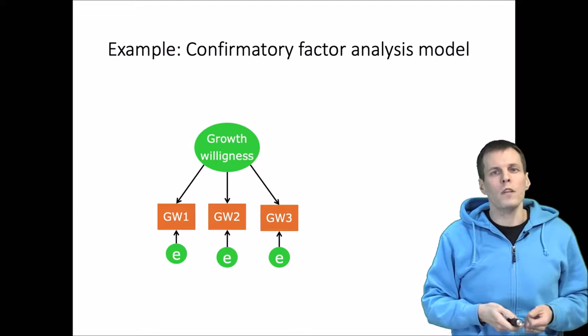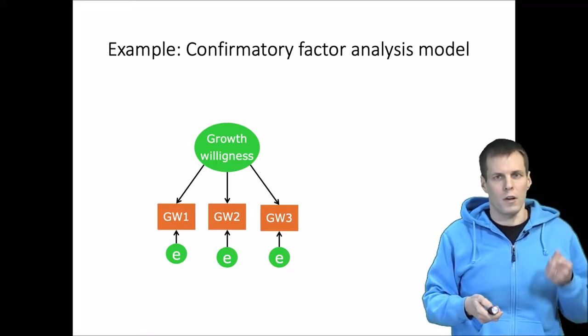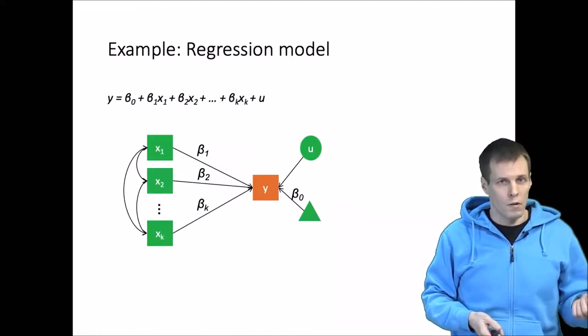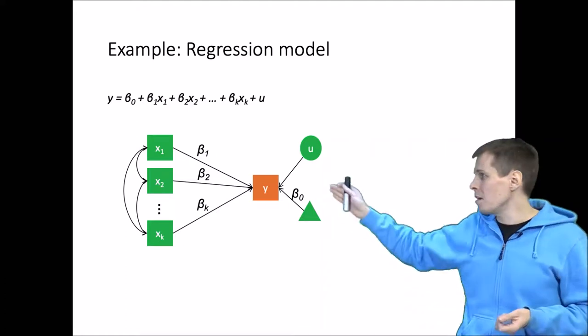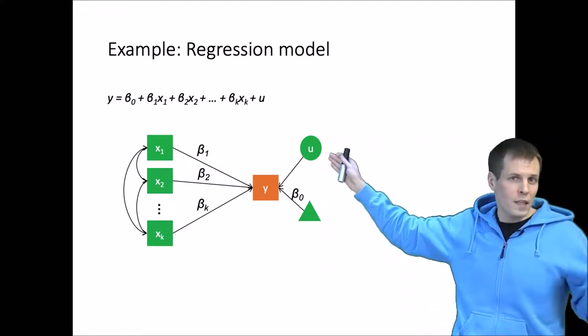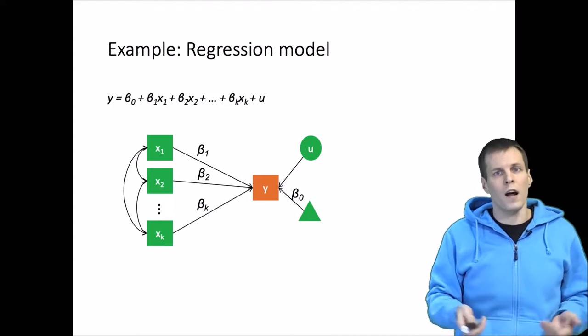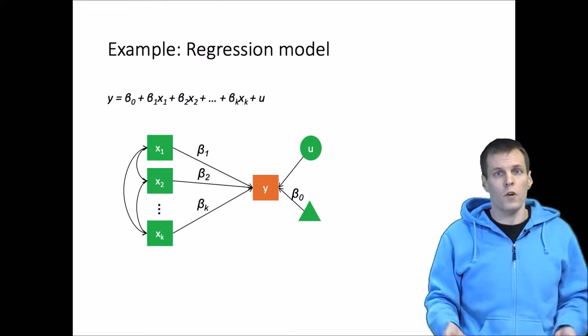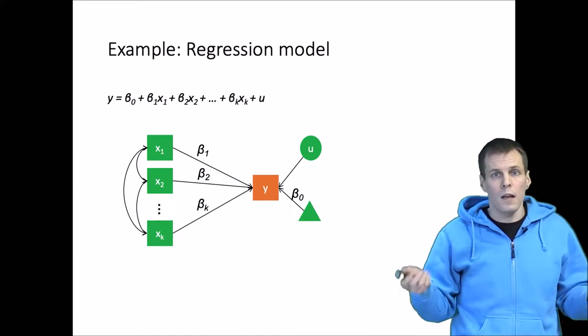Another commonly used model which contains latent variables is normal regression analysis. We can see here that the error term is not observed—it is a latent variable. Whenever a variable is not observed, we don't have values for it, so it's latent. That's the definition.